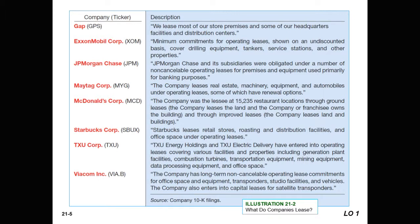Here we're looking at some of the descriptions from 10K filings on companies that lease. Notice that Gap leases most of their store premises, some of the headquarter facilities, and the distribution centers. Exxon Mobil Corp has minimum commitments for operating leases shown on an undiscounted basis to cover drilling equipment, tankers, service stations, and other properties. JPMorgan Chase is obligated under a number of non-cancellable operating leases for premises and equipment used for their banking purposes.